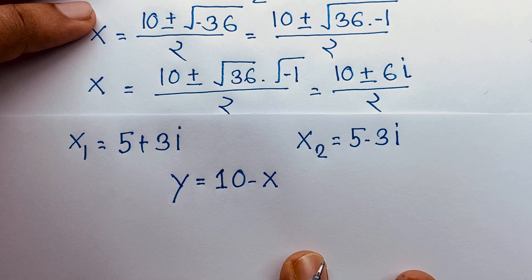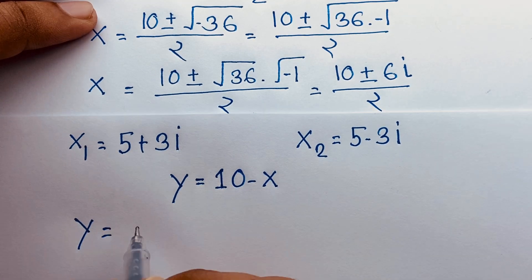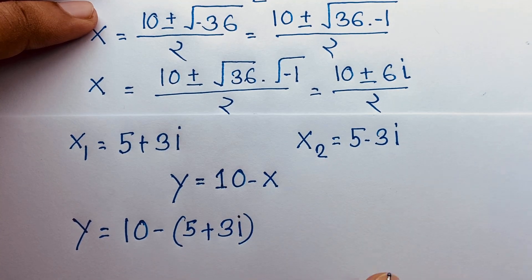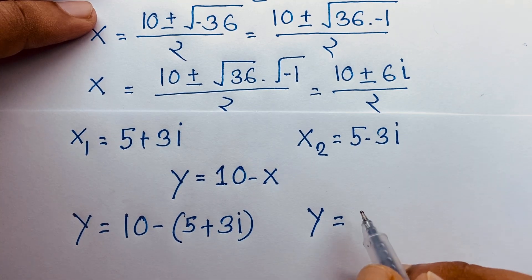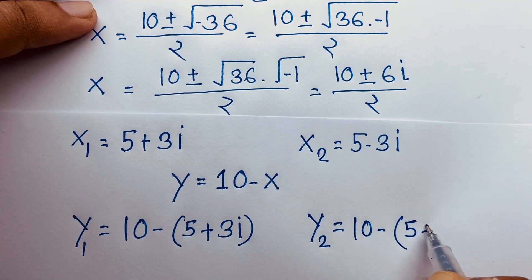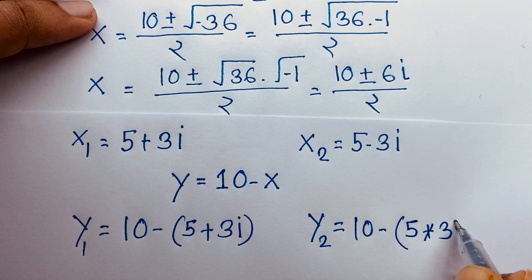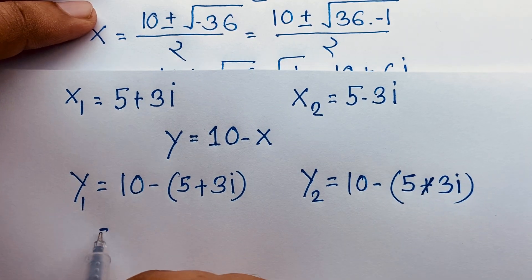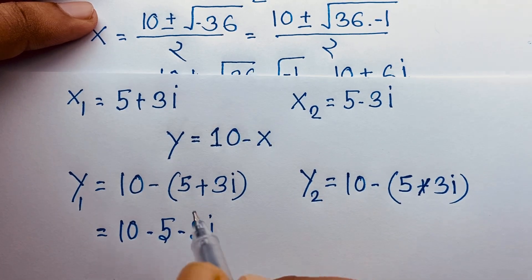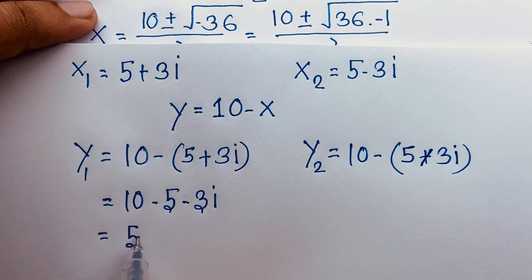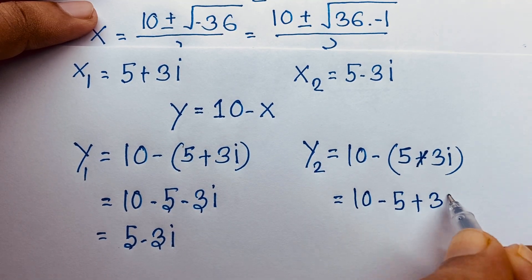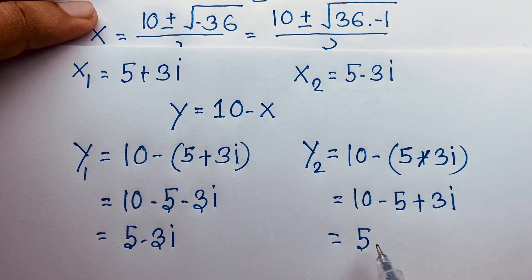For y1: y equals 10 minus x, where x is 5 plus 3i, giving y1 equals 10 minus 5 minus 3i, which is 5 minus 3i. For y2: y equals 10 minus x, where x is 5 minus 3i, giving y2 equals 10 minus 5 plus 3i, which is 5 plus 3i.